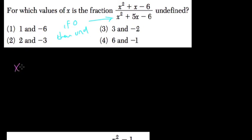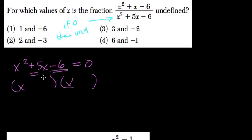So factor it out. We have x squared plus 5x minus 6. If that equals 0, what x value would cause us to be undefined? So we have our x's here, and to find the two other numbers, what are the two factors of negative 6 that add up to positive 5?